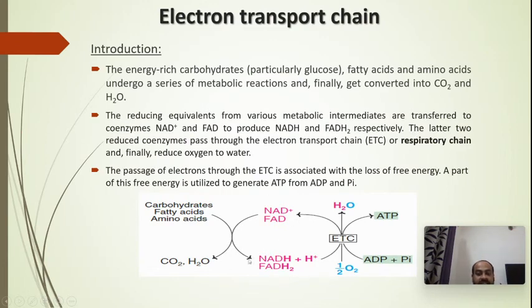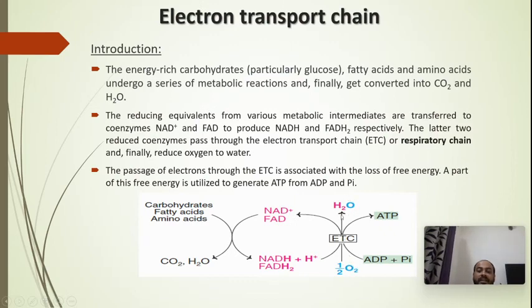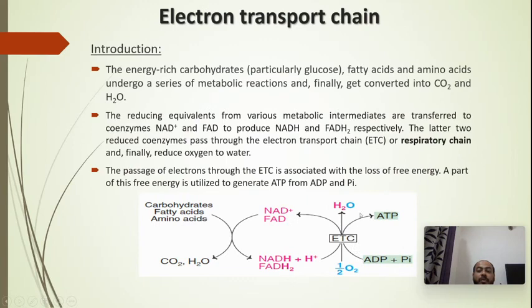The reduced coenzymes — NADH and FADH2 — pass through the electron transport chain. From here, hydrogen molecules come out and bind with oxygen atoms to form H2O. During this process, electrons will flow and energy will be liberated. That energy is taken up by ADP and inorganic phosphate to form ATP. All of this happens during the transport of electrons from one complex to another.